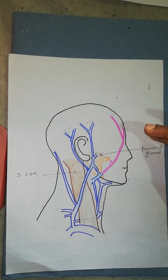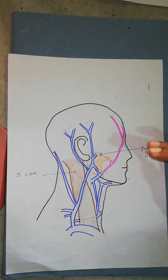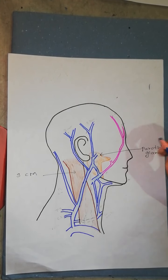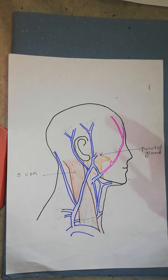Today we are going to talk about the external jugular vein, anterior jugular vein, and internal jugular vein. Let's start our discussion with some veins of the head.